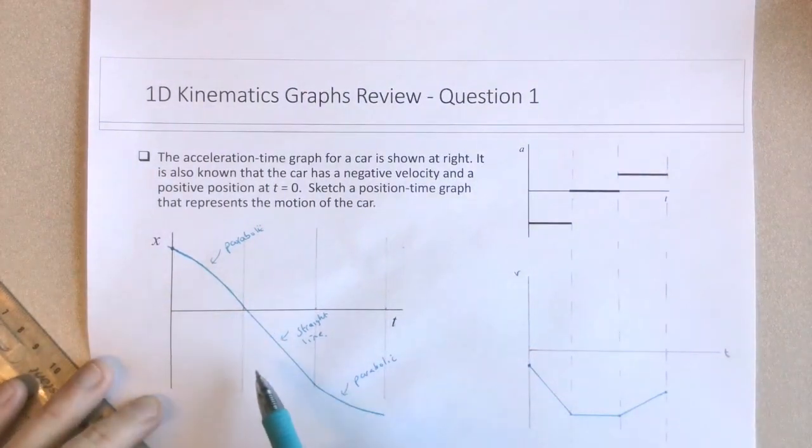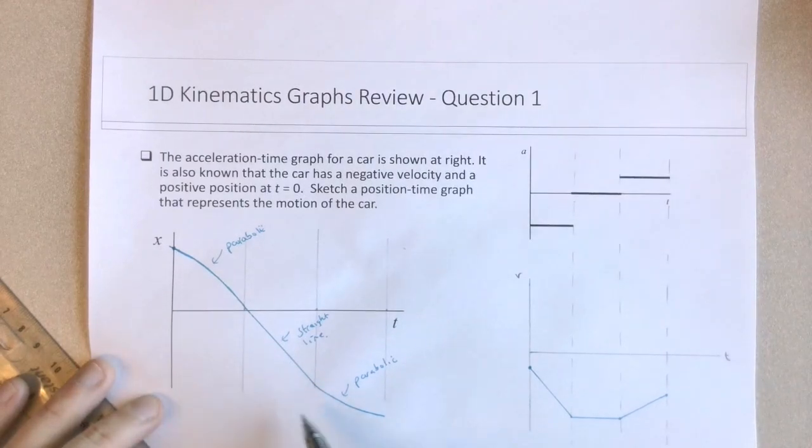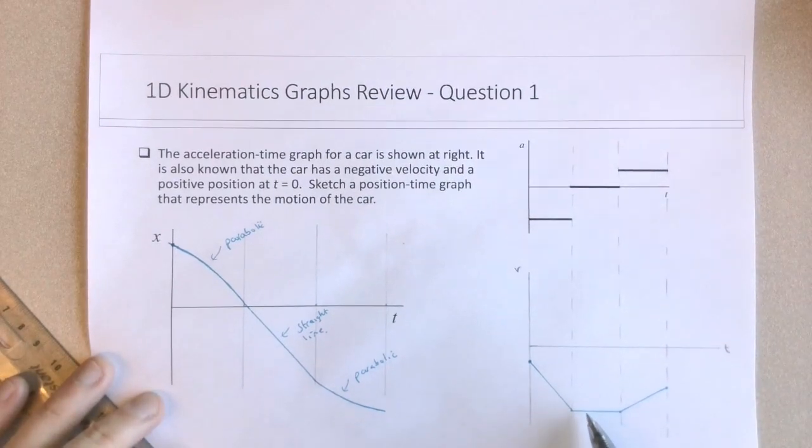And at all times, the tangent lines to these, these slopes must be negative because at all times in our Vt graph, the velocity is also negative.